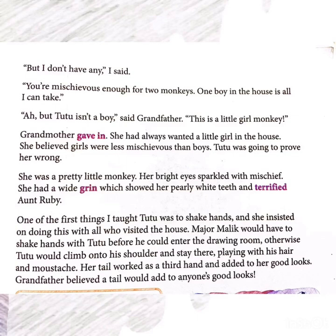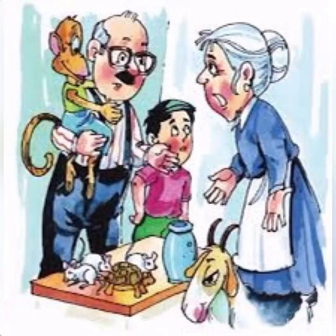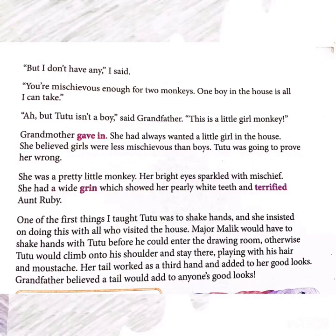Grandmother got anxious and said she could only keep one man in the house and couldn't handle two. Grandfather replied that Tutu was not a man — she was a little girl. Grandmother gave in, as she had always wanted a little girl in the house. She believed girls were less mischievous than boys, but she didn't know that Tutu was the naughtiest.